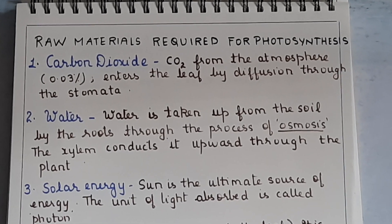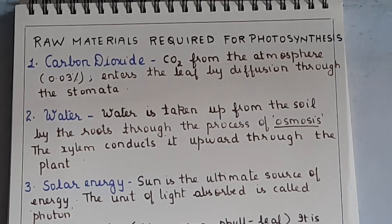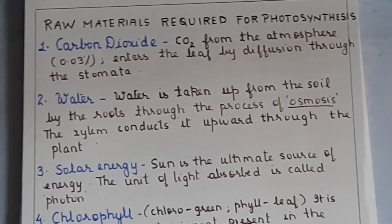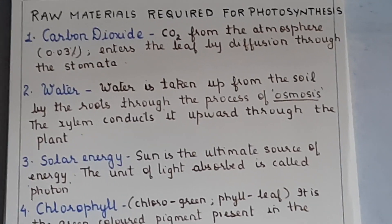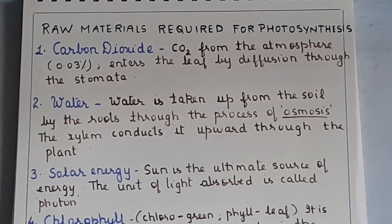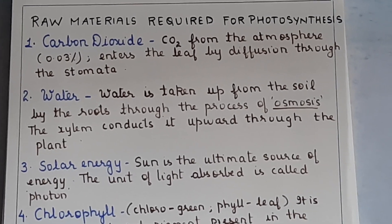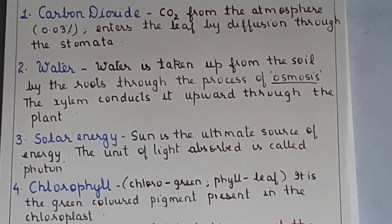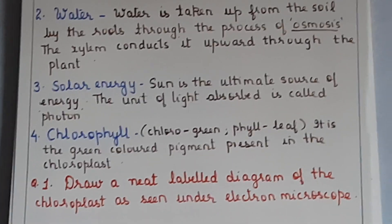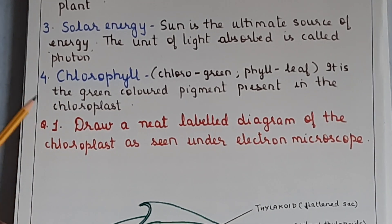Now let us see what raw materials are required for photosynthesis. Carbon dioxide is taken from the atmosphere and enters through the open stomata by diffusion. Water is absorbed by osmosis from the roots and distributed to all parts of the plant. Light energy — solar energy — is used, and the unit of light absorbed is the photon. Chlorophyll is the green pigment present in the chloroplast.